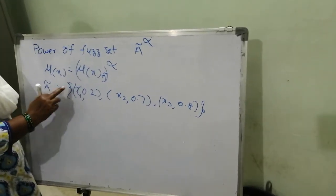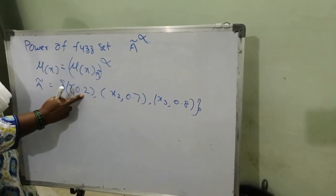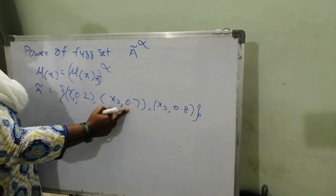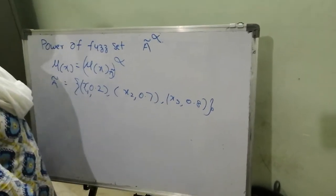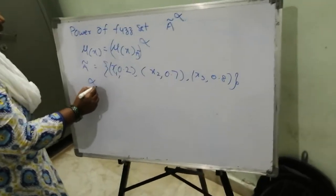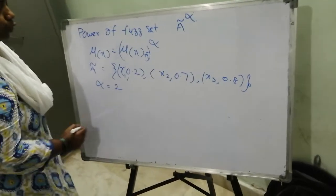So in fuzzy set A, the first membership value is 0.2, second membership value is 0.7, third membership value is 0.8. So alpha is 2.